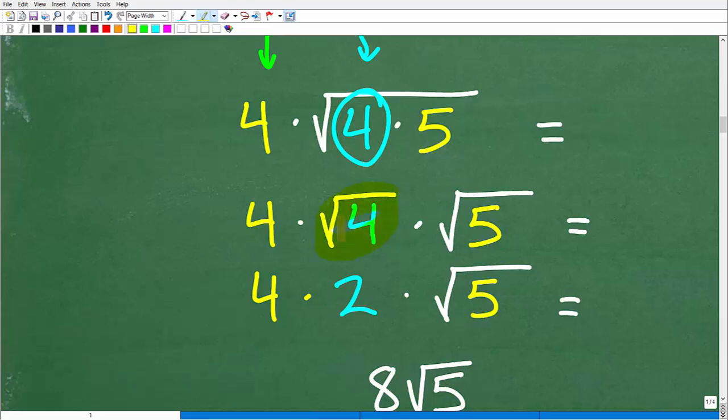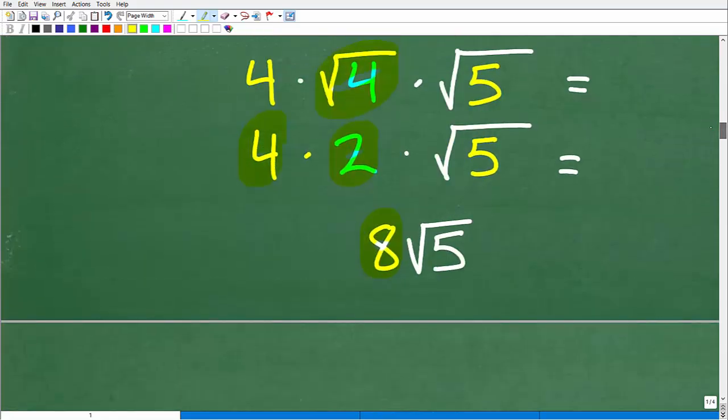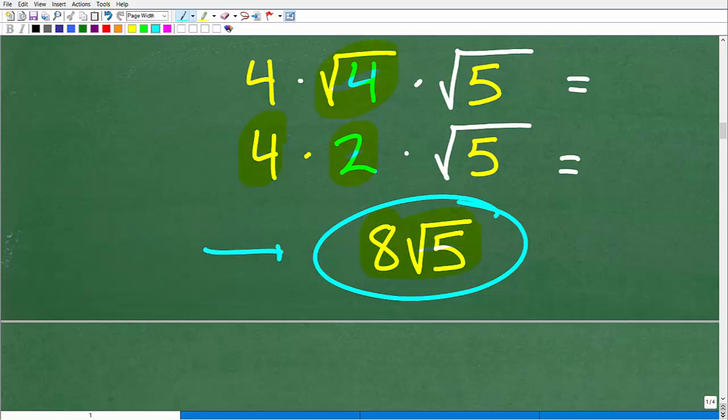That's going to be 2, right? So, now we have 4 times 2, which is 8 times the square root of 5. And this is the fully simplified answer.